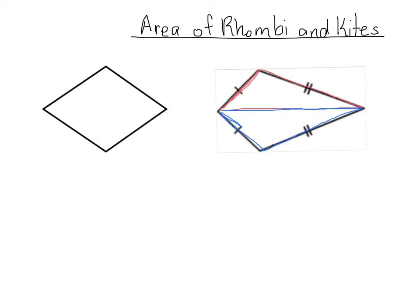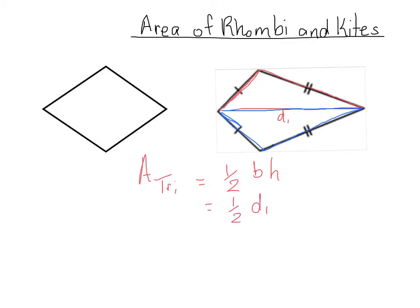In order to figure out the area of the red triangle, the area of a triangle equals half base times height. In this particular example, our base happens to be one of the diagonals of our figure — let's call that diagonal one. So the area of the red triangle is a half times diagonal one times height. But what is the height?